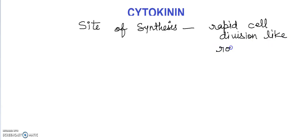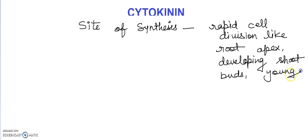Like root apex, developing shoot buds, young fruits, seeds, etc. These are basically sites of synthesis areas like root apex, developing shoot buds, young fruits, and seeds.